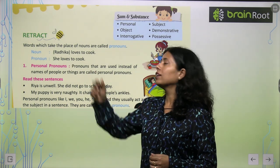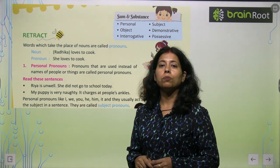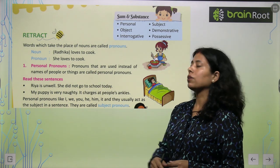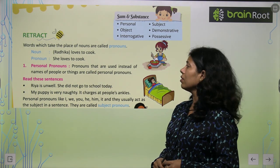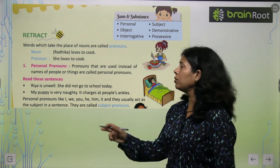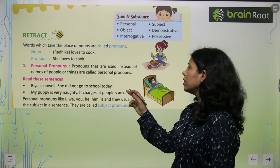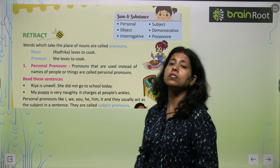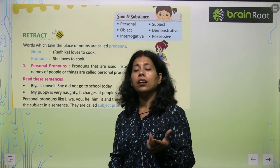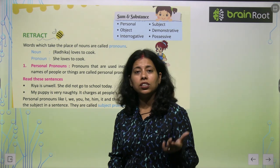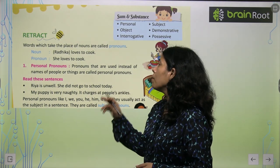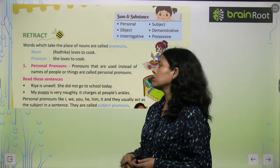Noun example: Radhika loves to cook. Pronoun example: She loves to cook. Personal Pronouns — pronouns that are used instead of names of people and things are called Personal Pronouns. In place of someone's name, we use I, she, he, you. These are called Personal Pronouns.